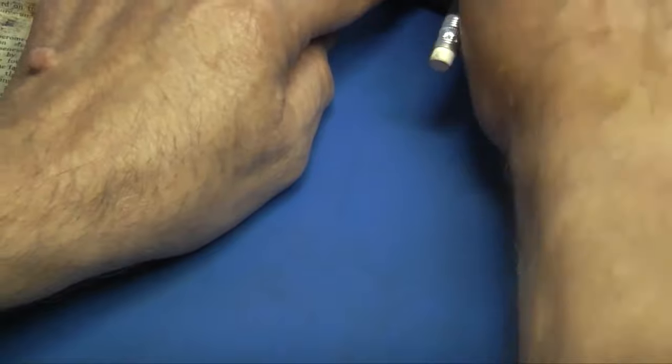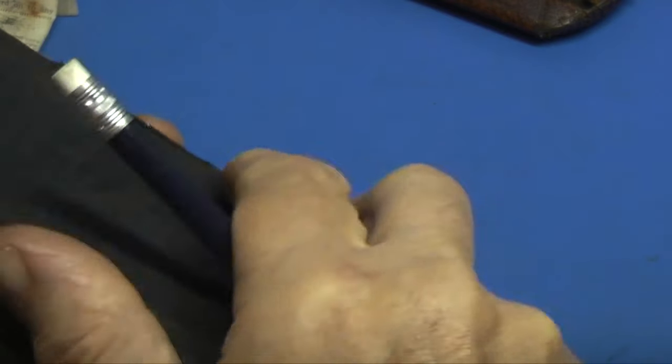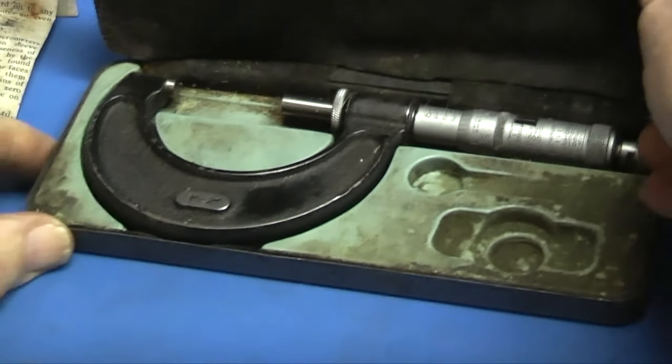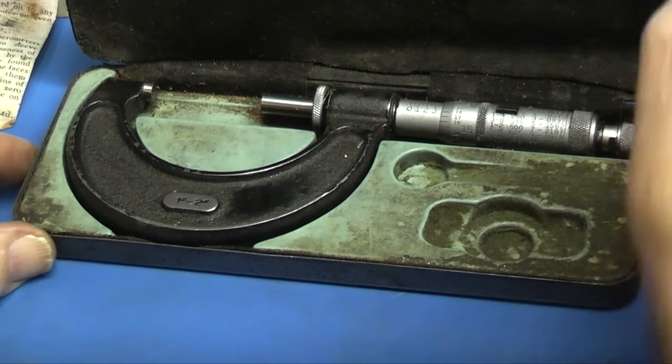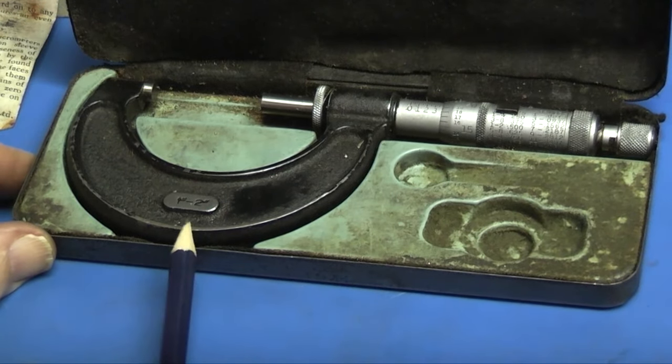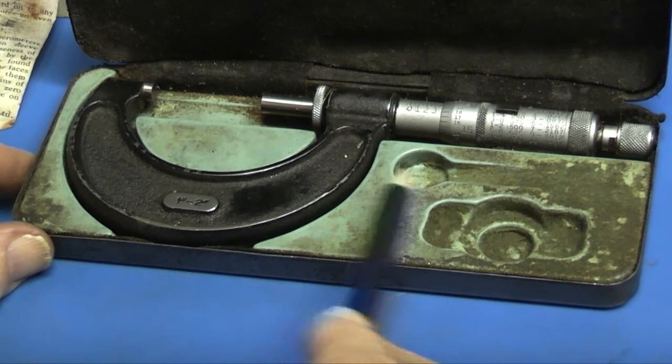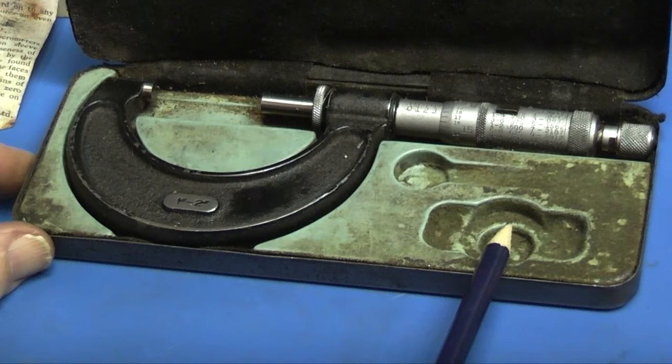That's a 0 to 1 inch. Now I also have some other micrometers. I'll show you these. The heads are the same. This one is a 1 inch to 2 inch. And you can see, no spanner, no setting piece.